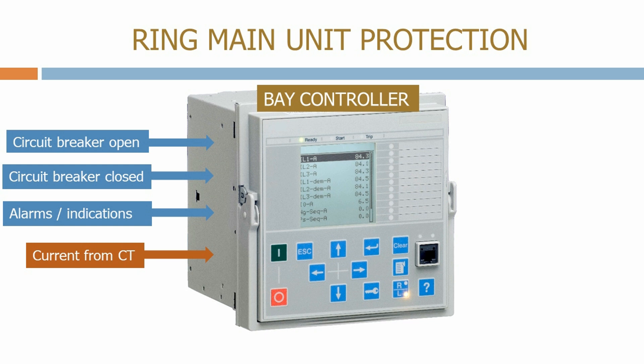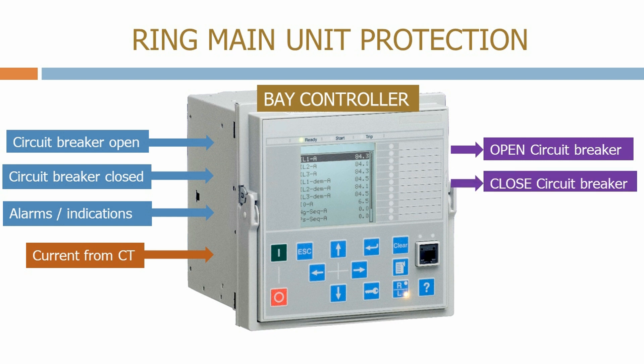The unit also provides control signals including open circuit breaker and closed circuit breaker. This allows someone back in the main control centre to switch the feeder on and off. Next, we have the trip circuit breaker signal which energises the circuit breaker trip coil when the unit detects a fault on the system.